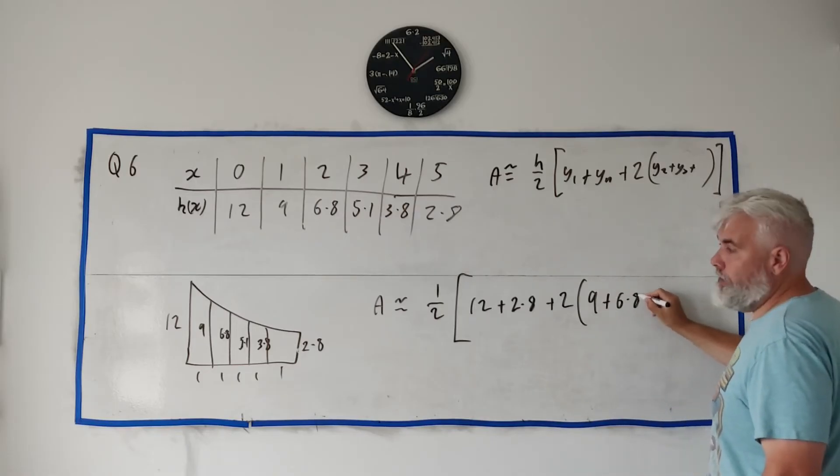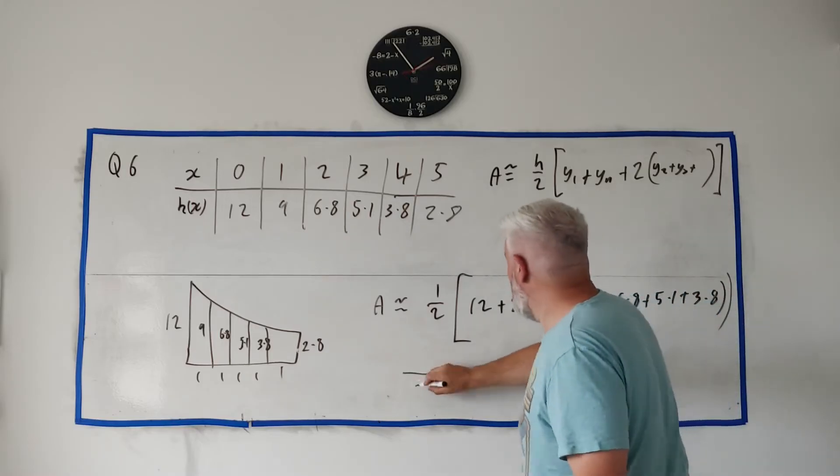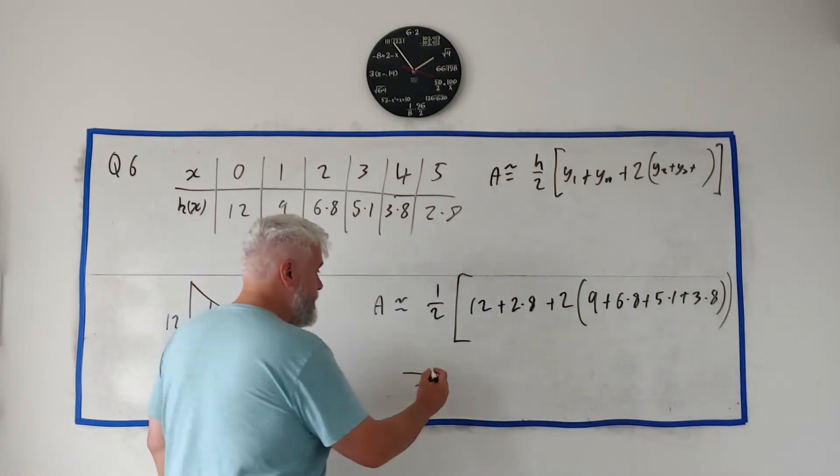So we have a 9, we have 6.8, we have a 5.1, and we have a 3.8. Put all that into a calculator. You can do it slowly, you can do it all in one go. Put all that into a calculator and double check we get the answer 32.1, just like they told us we would.